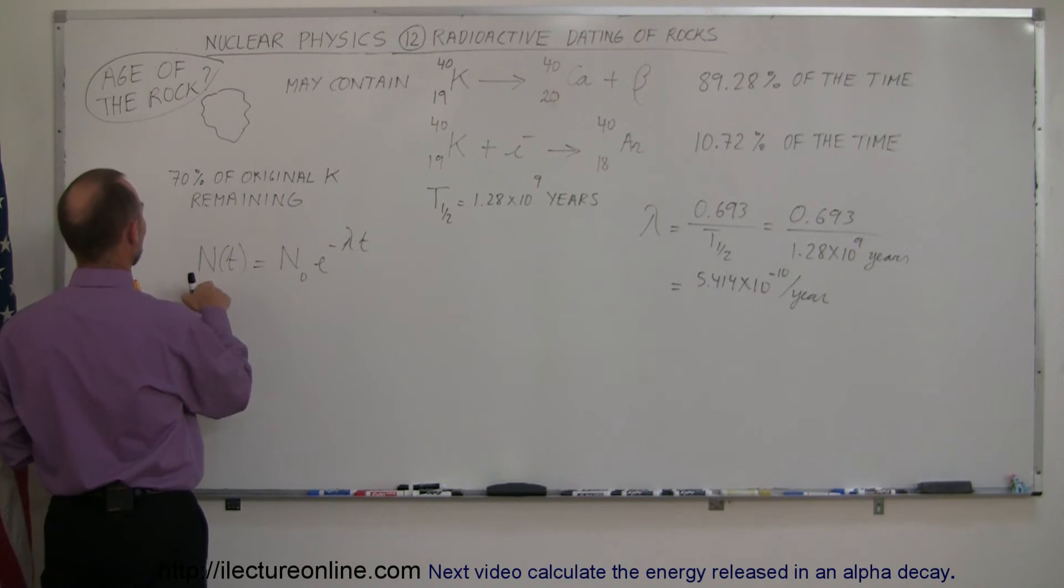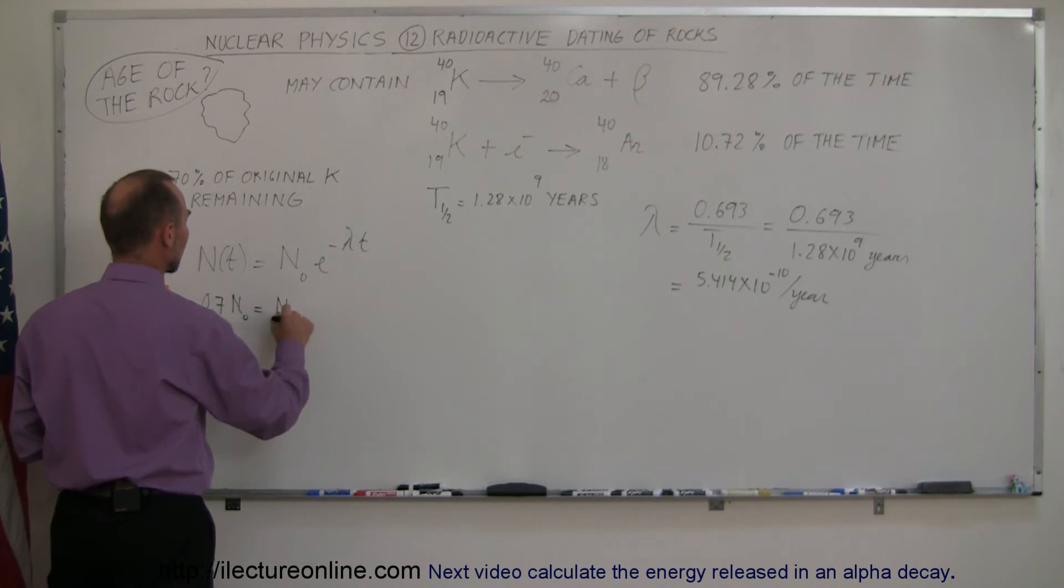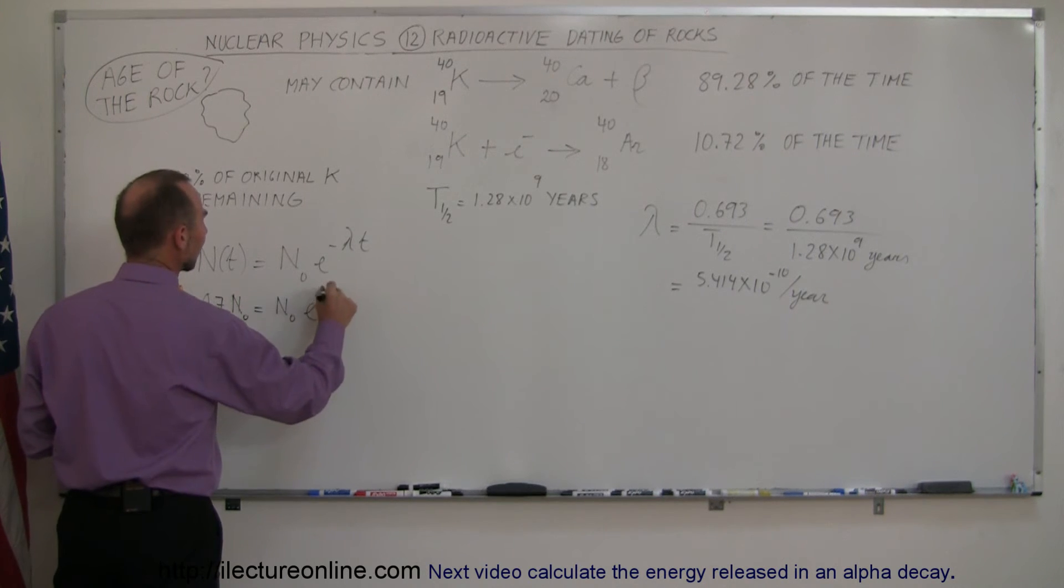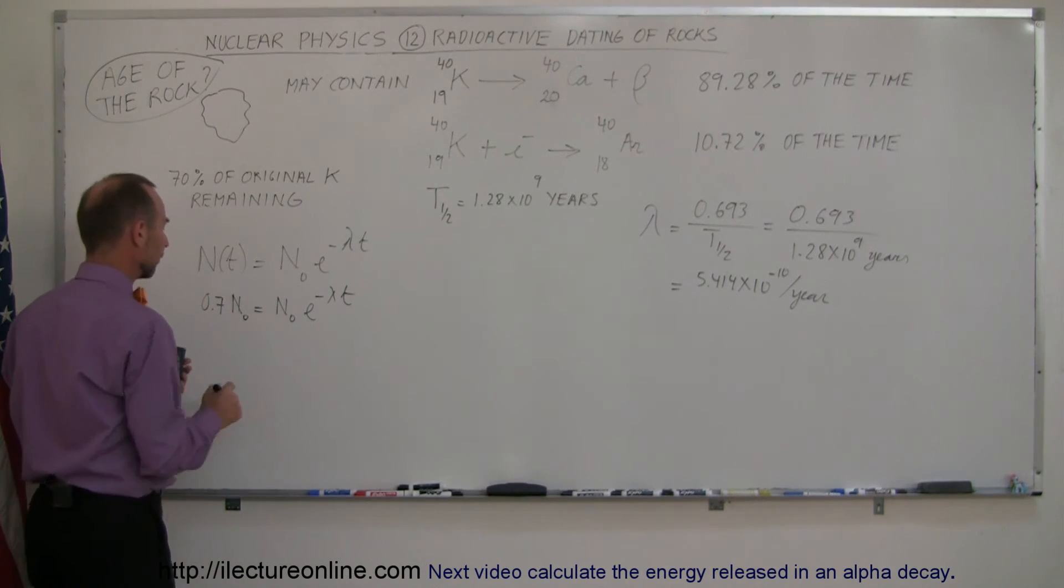So the amount we have is 0.7 times the original amount, because that's 70% of the original amount, equals the original amount times e to the minus lambda times t. And of course we can cancel out the N naught on both sides,